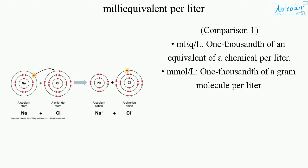Comparison 1: mEq/L is one-thousandth of an equivalent of a chemical per liter. mmol/L is one-thousandth of a gram molecule per liter.